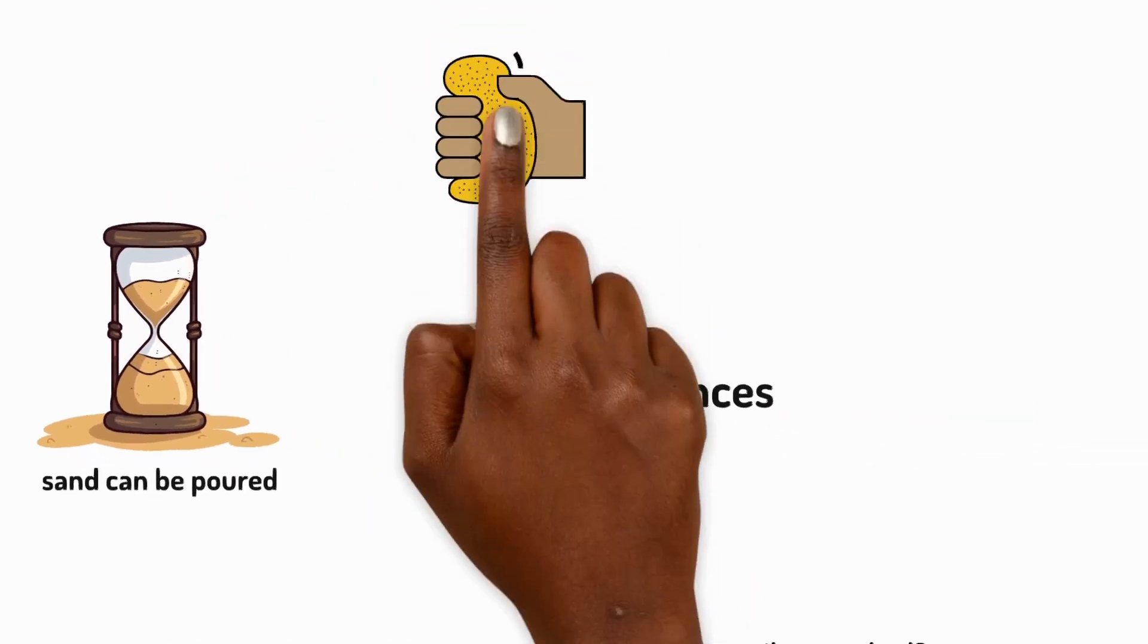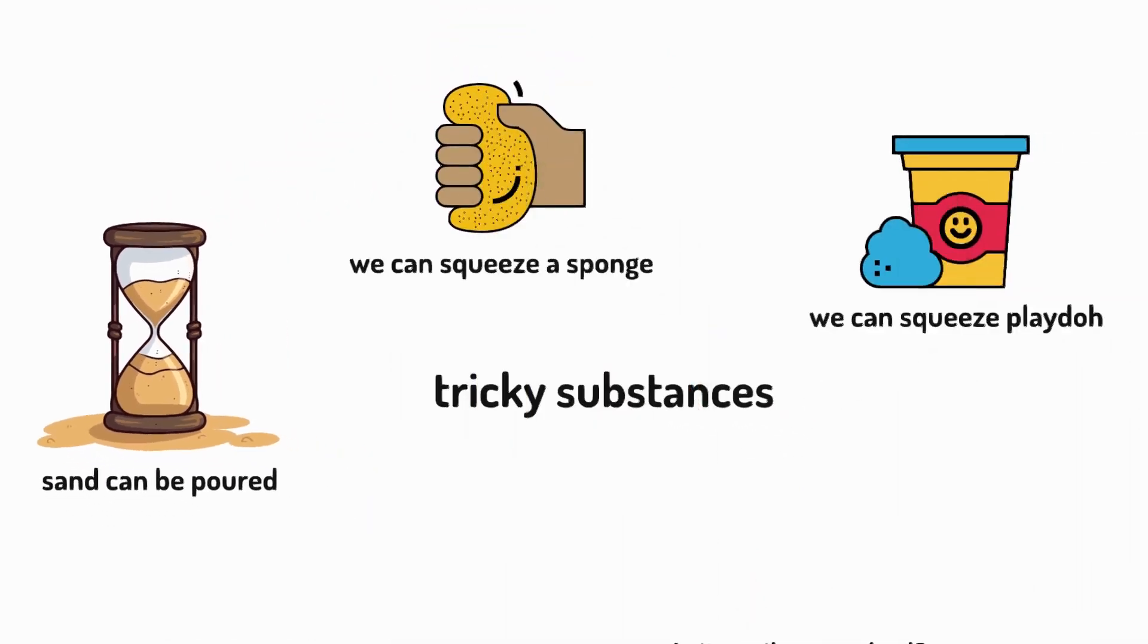Similarly, sponges and play-doh are solids, but they're easy to squash. Why do you think this is?